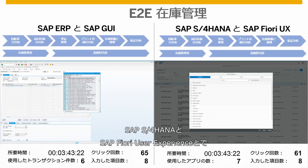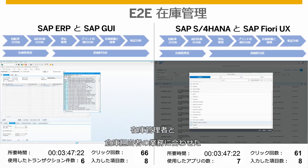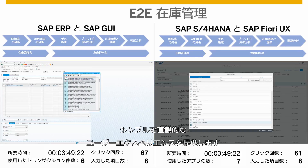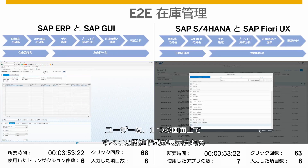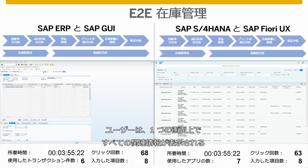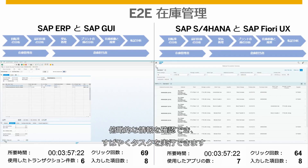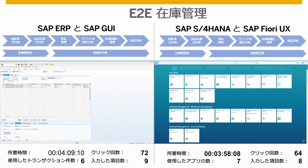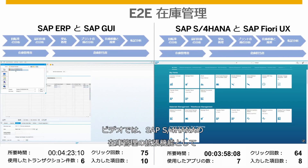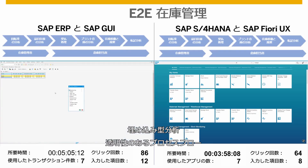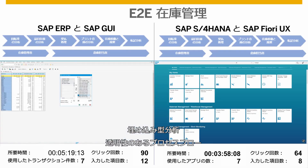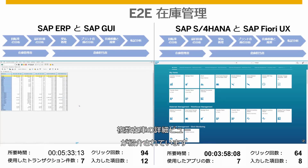SAP S4HANA with the SAP Fiori user experience provides a simple and intuitive user experience tailored to the way inventory managers and warehouse clerks work. This allows users to complete tasks quickly with a comprehensive view of all relevant information on one screen. Additional enhancements include embedded analytics, process flow transparency, and a more detailed view of multiple stocks.